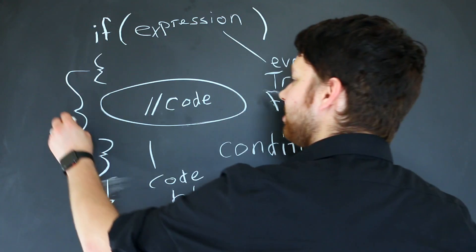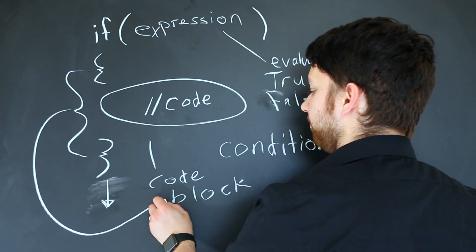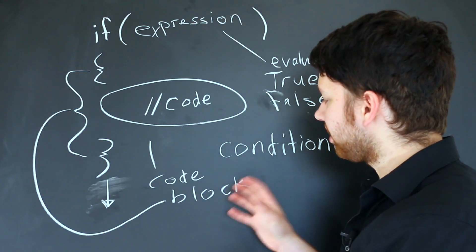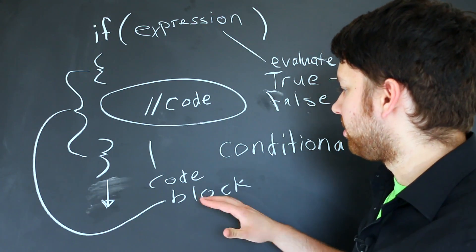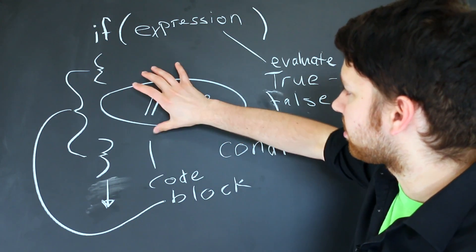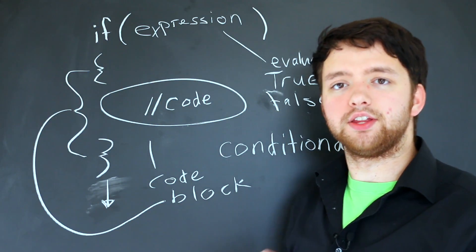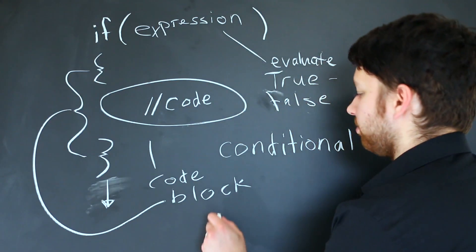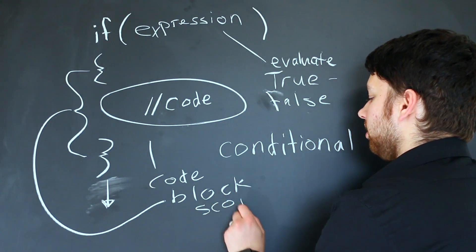The thing that makes it special is really that things inside of this code block are a little bit different than things outside of the code block. It really has to do with something called scoping, and this will make a lot more sense when you get more into variables and their lifetime.